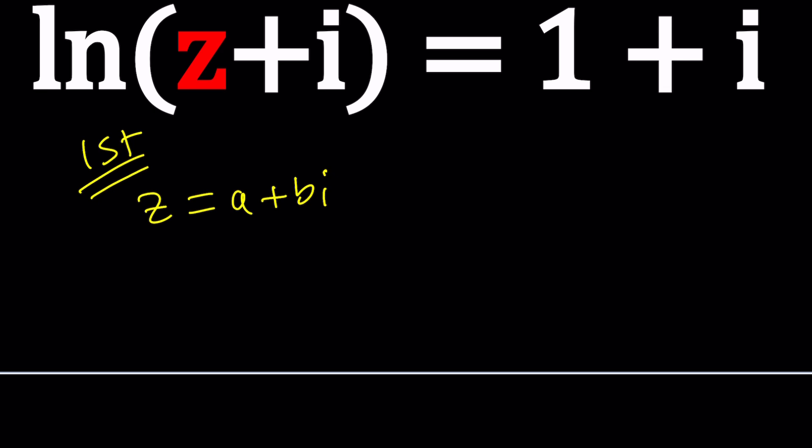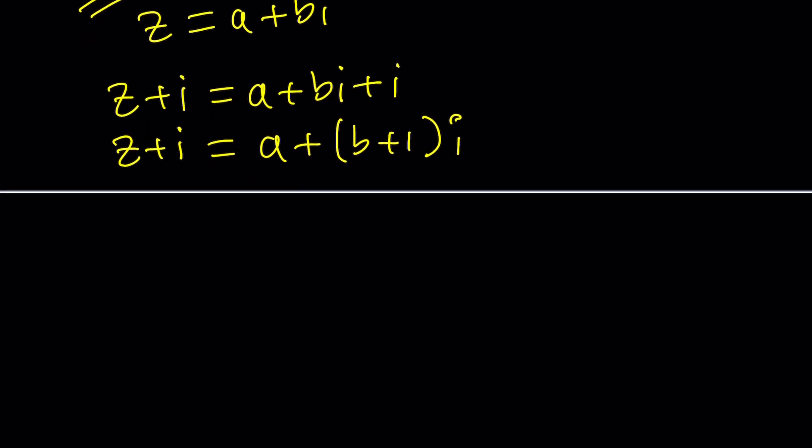Now we're going to be natural logging this but let's go ahead and find z plus i first. This is a plus bi plus i and I can definitely express it as b plus one being the imaginary part. So we have a new complex number. My goal is to solve for z so I need to find a and b.